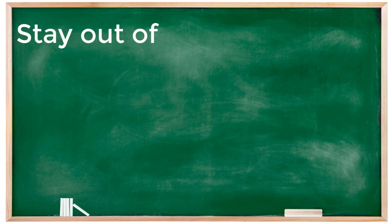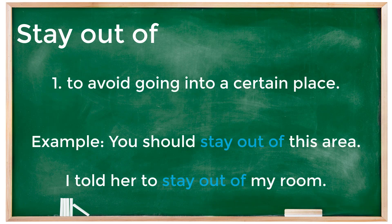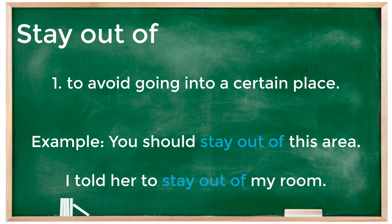Our second phrasal verb is stay out of. Stay out of means to avoid going into a certain place. For example: 'You should stay out of this area' — meaning you should avoid coming into this area. Another example: 'I told her to stay out of my room.'